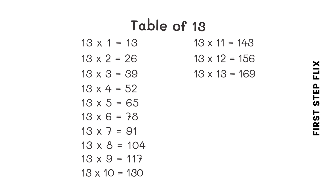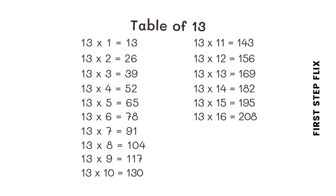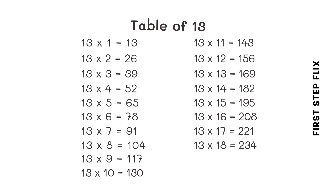13 thirteens are 169. 13 fourteens are 182. 13 fifteens are 195. 13 sixteens are 208. 13 seventeens are 221. 13 eighteens are 234. 13 nineteens are 247. 13 twenties are 260.